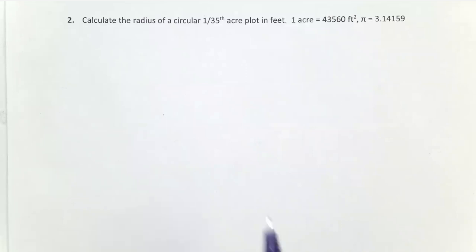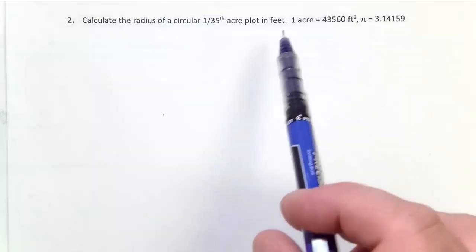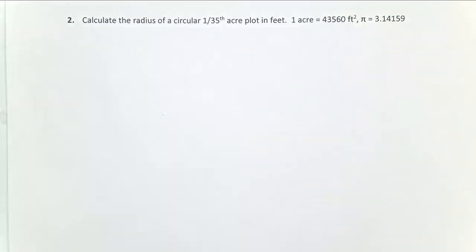In our second problem, we've been given the area of a circular plot. It's 1/35th of an acre circular plot. We've been looking now to calculate the radius in feet so that we could go out and measure it out and actually install this plot.